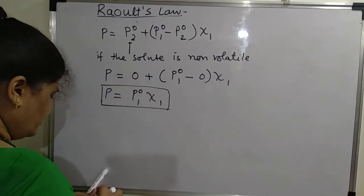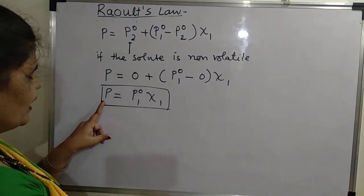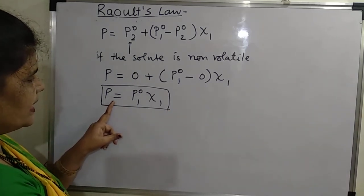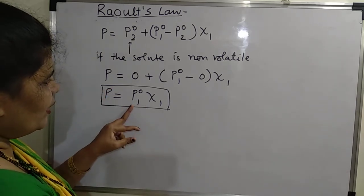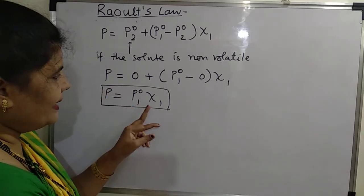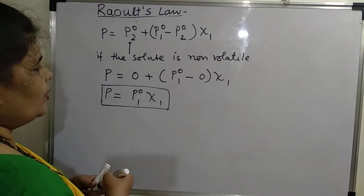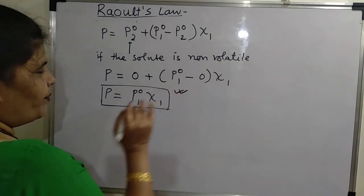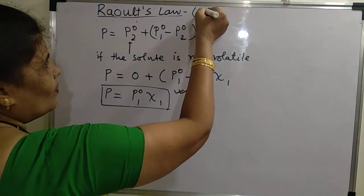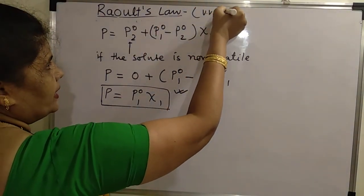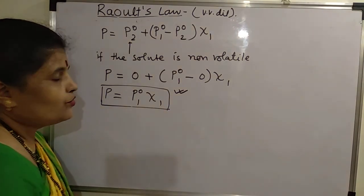Raoult's Law states that the total vapor pressure of any volatile component is equal to the product of the vapor pressure of the pure component and its mole fraction in the solution. It is very important to note that Raoult's Law is applicable for very dilute solutions only. Thank you students.